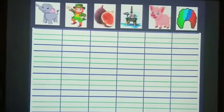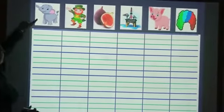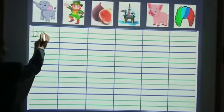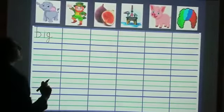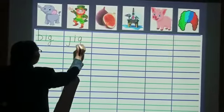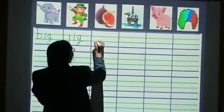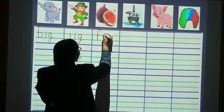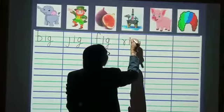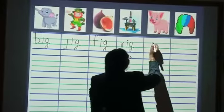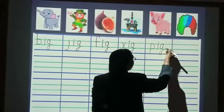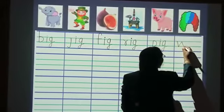Now, here we will divide the words into letters. Which word is this? Big, B-I-G. Which word is this? Jig, J-I-G. This is fig, F-I-G. This is rig, R-I-G. This is pig, P-I-G. And last is wig, W-I-G.